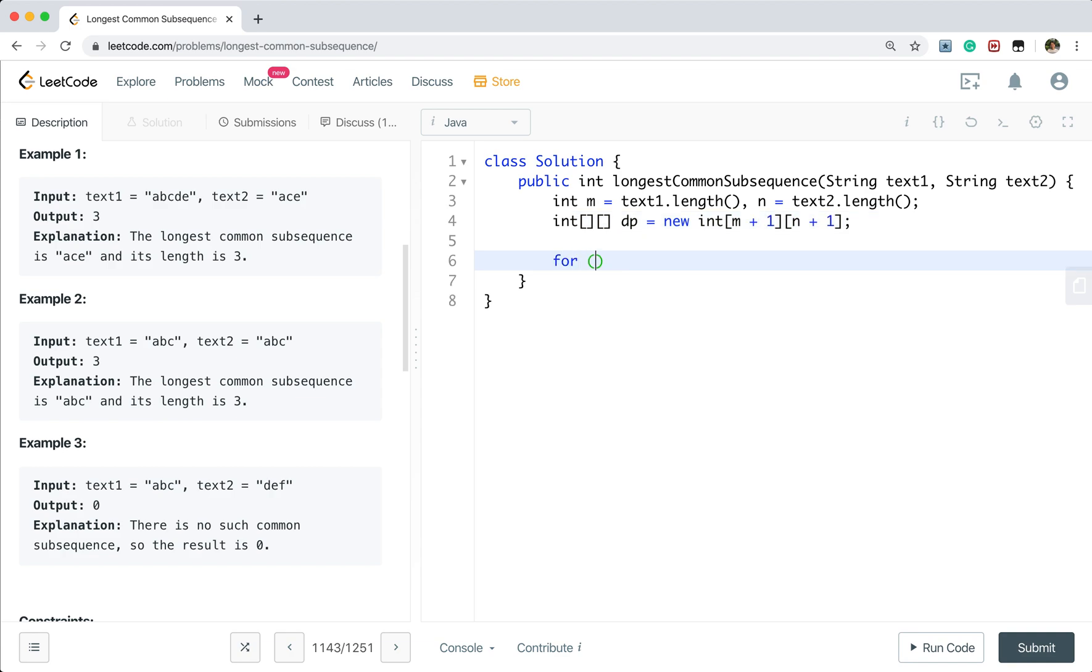We iterate these two strings, for int i equals 0, i less than M, i plus plus. For int j equals 0, j less than N, j plus plus. We get the current two characters which is text1 charAt i and c2 will be text2 charAt j.